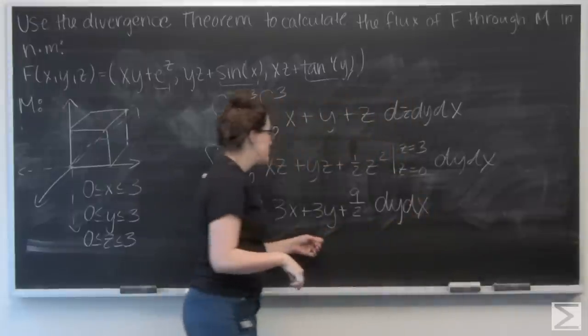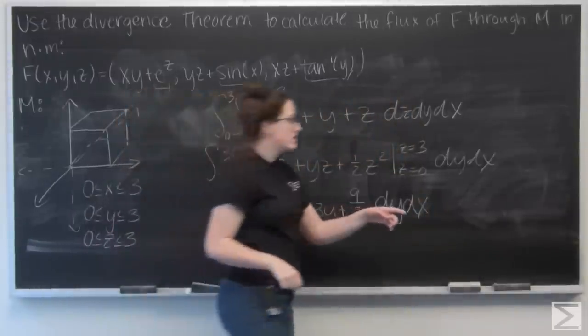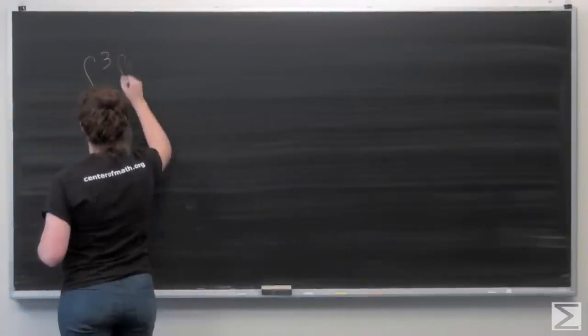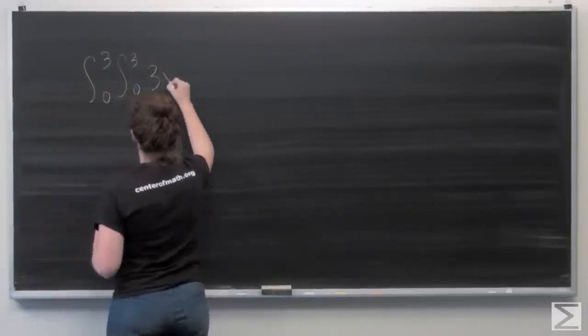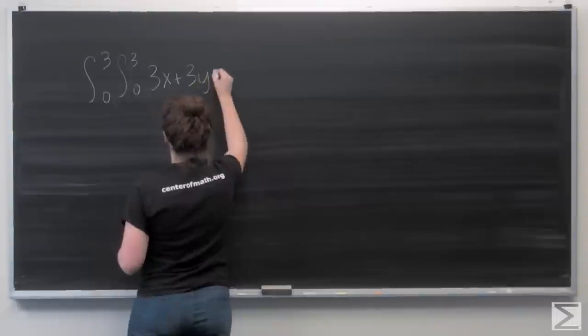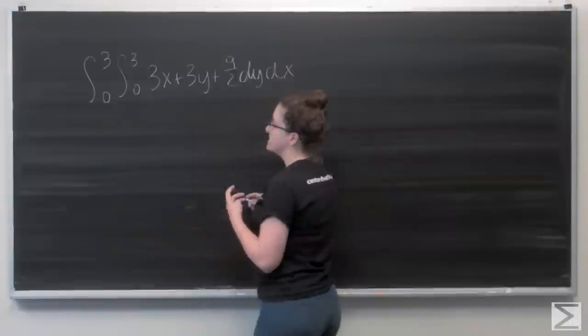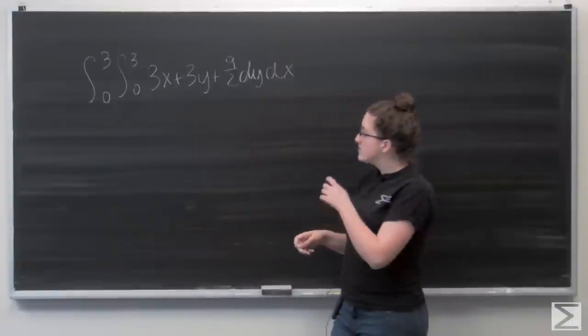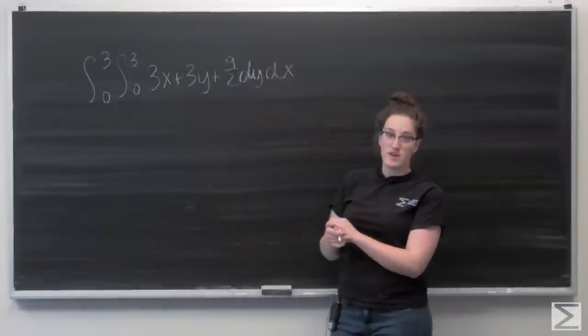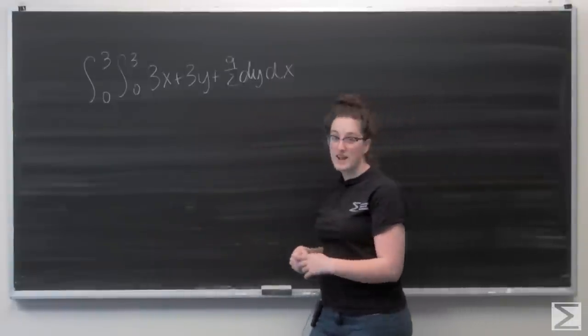And now I'm ready to integrate with respect to y. I'm going to go ahead and move over here and copy over my integral. And let's integrate with respect to y. So I'm going to get 3xy plus 3 halves of y squared plus 9 halves of y.